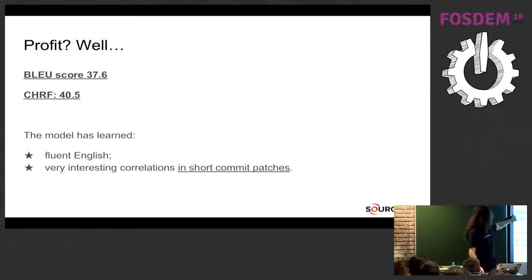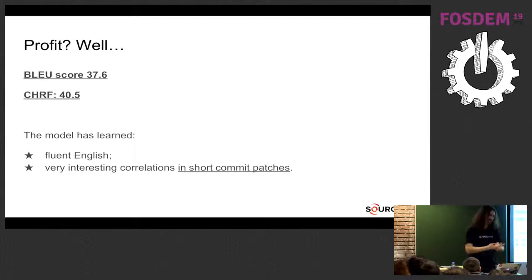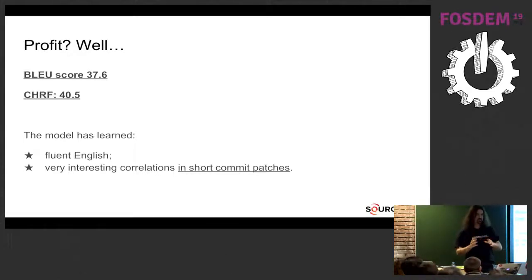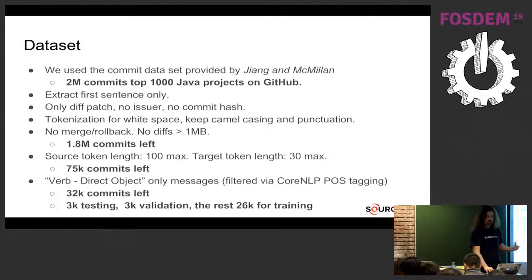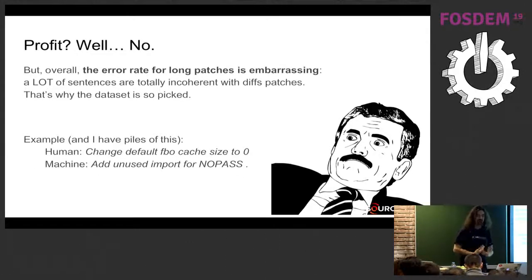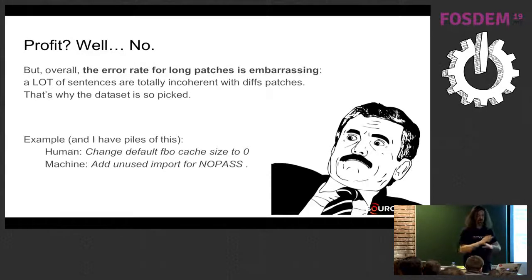Was everything a success? Well, I said okay, we are using a very constrained dataset — let's try to remove a lot of constraints and see how it performs on wild commits. I didn't get very good results. The error rate for long patches is embarrassing. A lot of sentences, although they are good English, are totally incoherent with the inputs. That's why the dataset is so carefully chosen. For example — and I have a lot of these — the human commit was 'change default FBO cache size to zero,' and the machine said 'add the news and import for no-pass.' There was no import anywhere and nothing related to that.